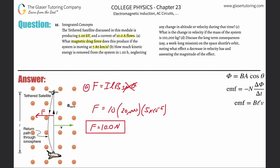Now letter b: how much kinetic energy is removed from the system in one hour, neglecting any change in altitude? One hour is 3,600 seconds. We have to figure out how much kinetic energy is removed, and we need to think about how to relate energy to the things we know — including possibly force.